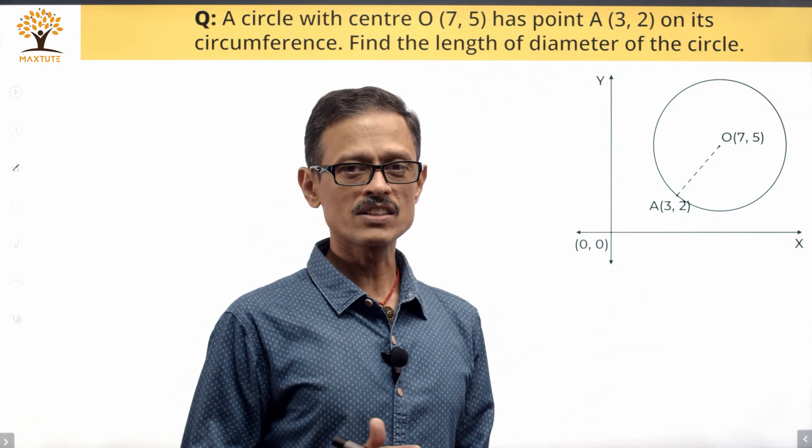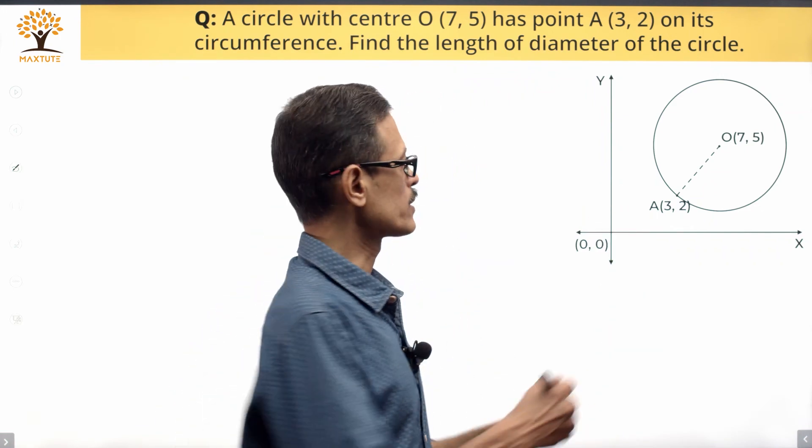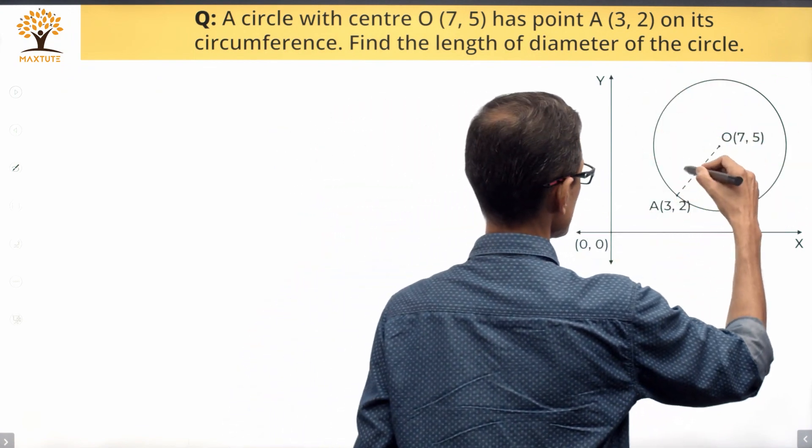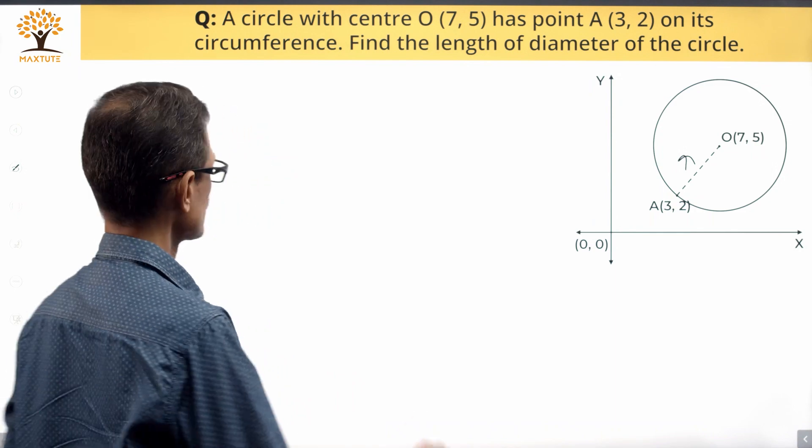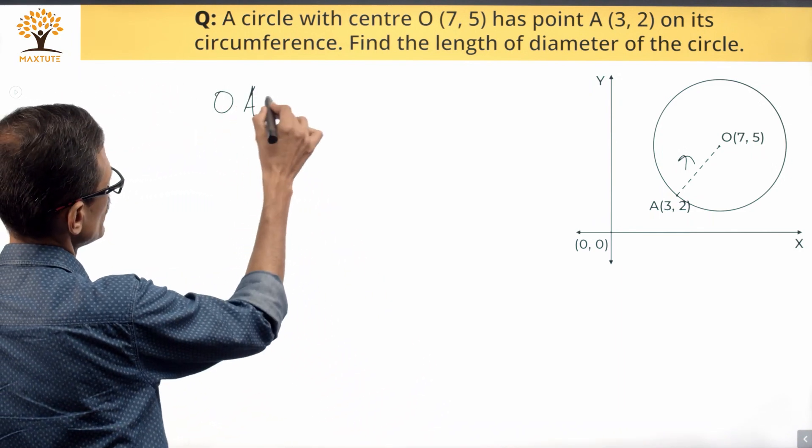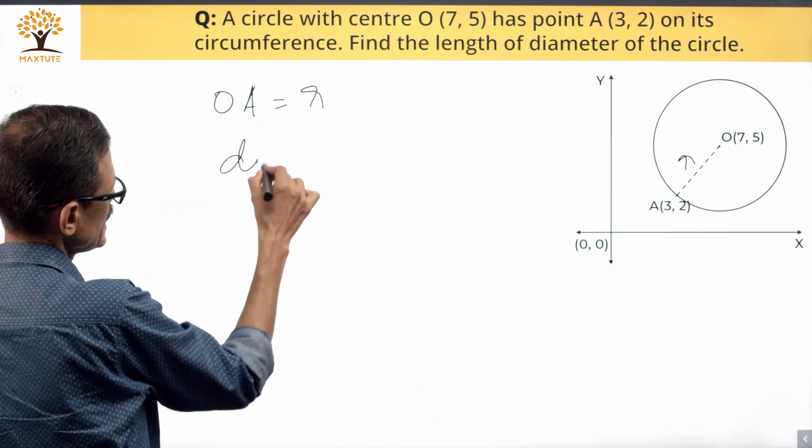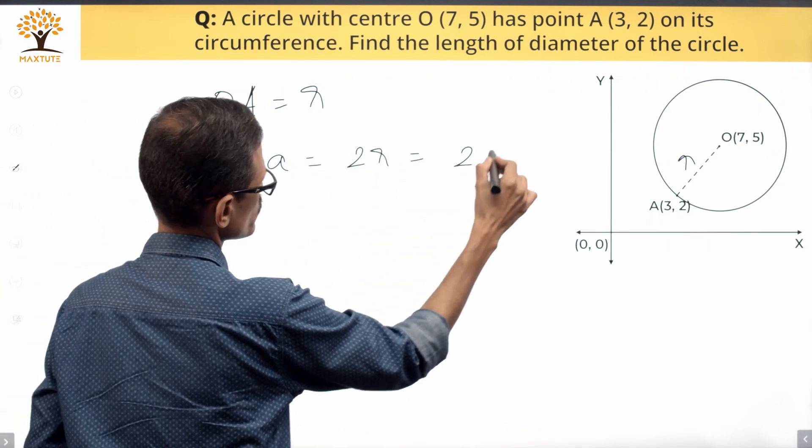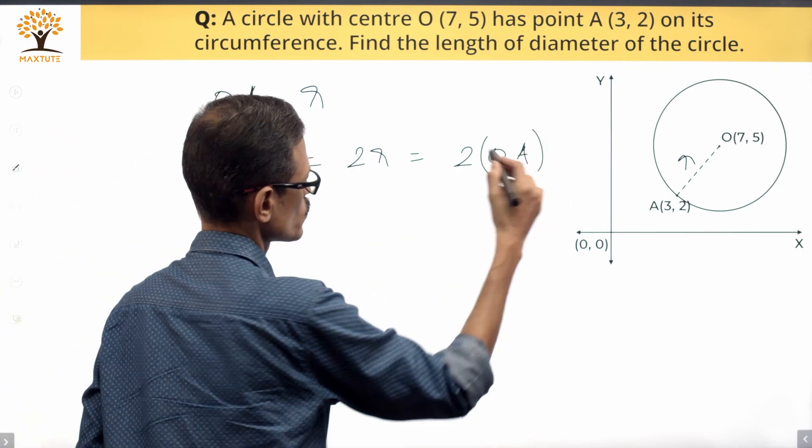The distance between the center of the circle and any point on the circumference will essentially give us the radius. So the distance OA is going to be the radius of the circle. What we need to find out is the diameter. Diameter is 2 times radius, which is 2 times the length of OA.